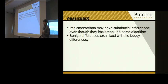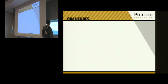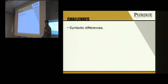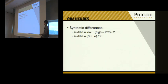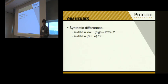Therefore we need to distinguish the two differences in order to identify the root cause. From our observation we classify the benign differences into two categories. The first is syntactic differences, which includes variable name differences and expression differences. For example, two code snippets that compute the midpoint between two values may use different variable names and different expressions.